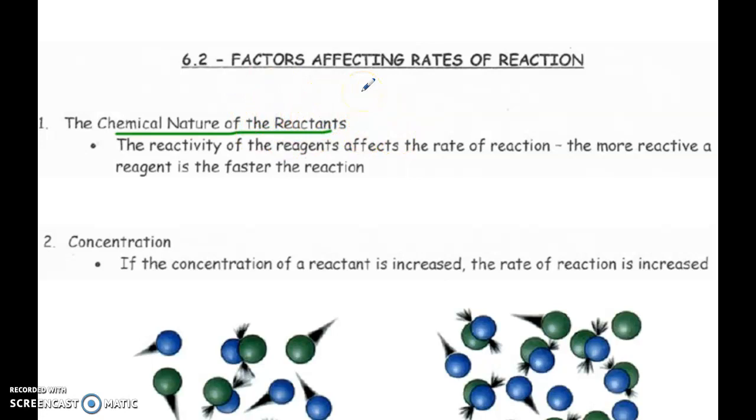So the first one is the substance we're using, like the nature of the reactants. So meaning, naturally some things react faster than others. You can even look at trends on the periodic table to help explain this. So if you remember, as we go down a group, for example, metals become more reactive. So if I'm comparing lithium to sodium, sodium is lower in group one than lithium is. Sodium is just naturally more reactive than lithium.